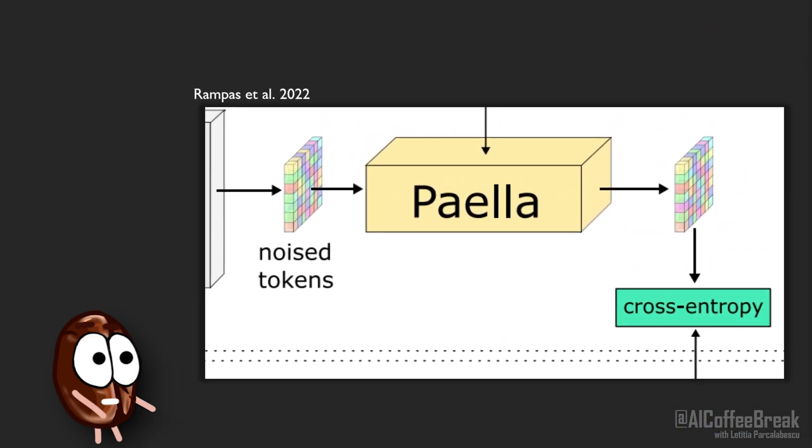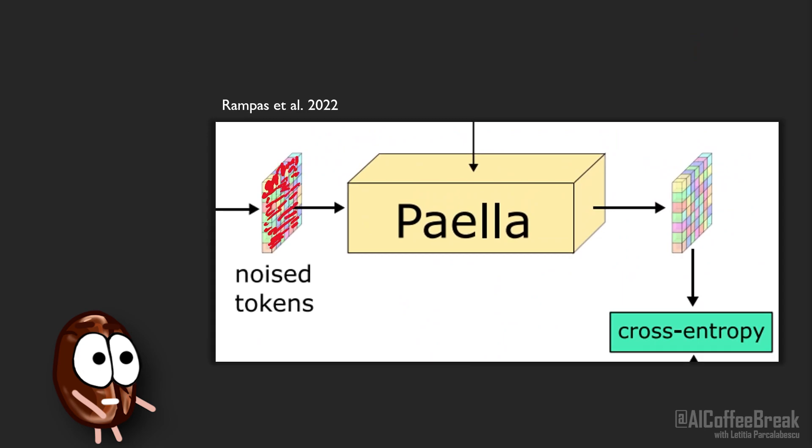During inference, to produce an image from just text, Paella takes a code word of just noise. It could try to denoise everything at once now, but during training it has never encountered the case of total noise in the input, so it would do quite badly. Therefore, it denoises the code word in a sequence of 8 steps.